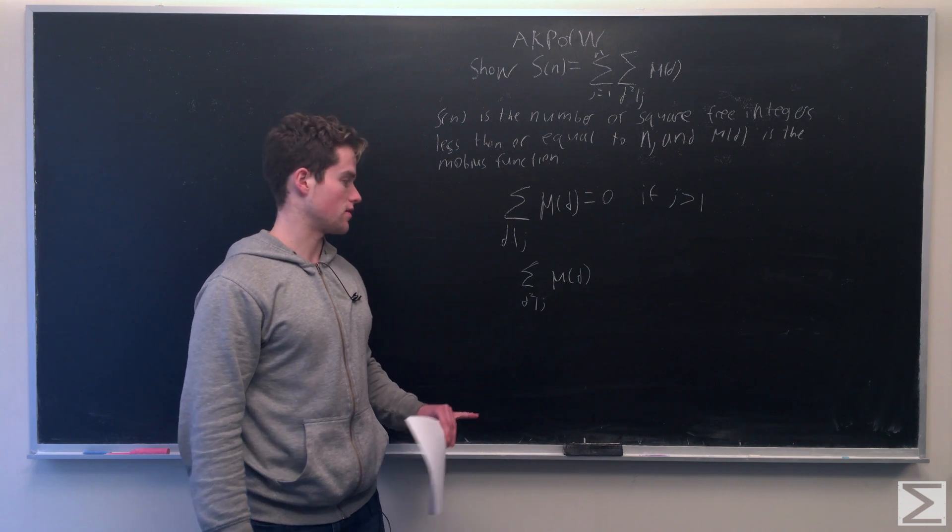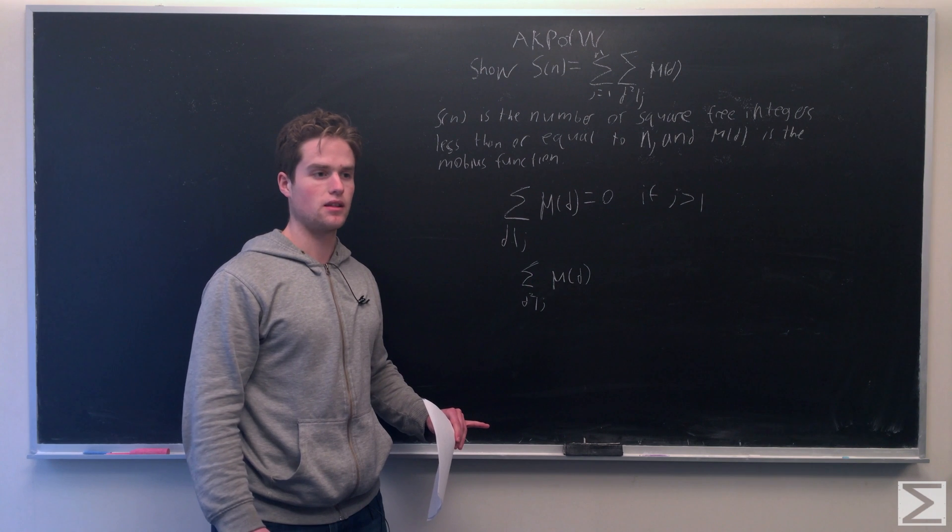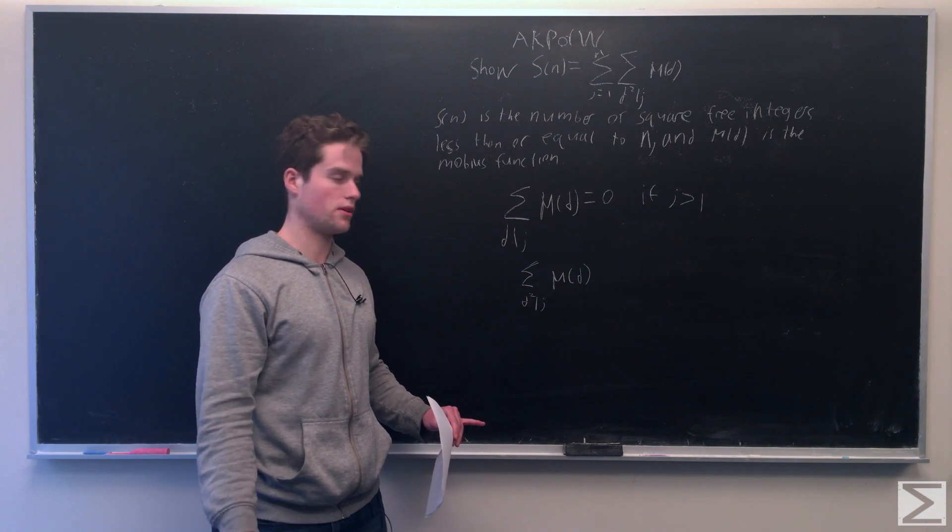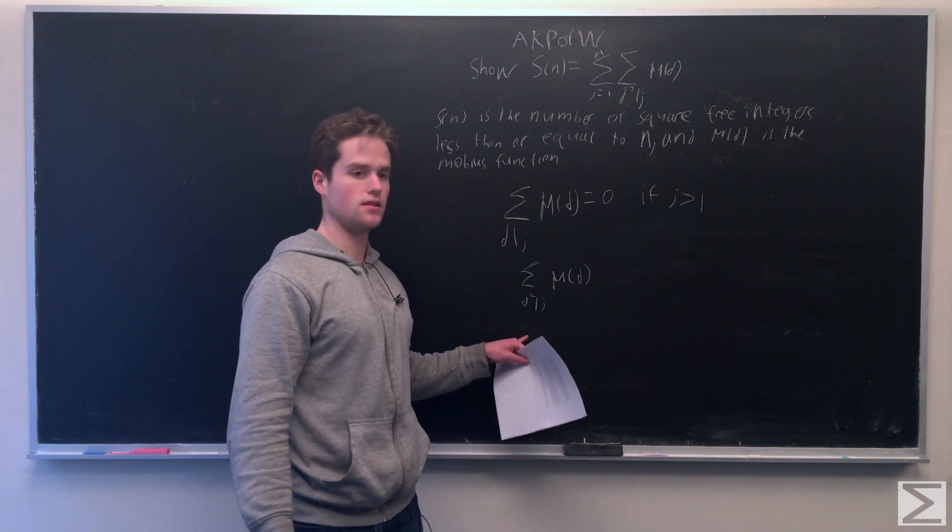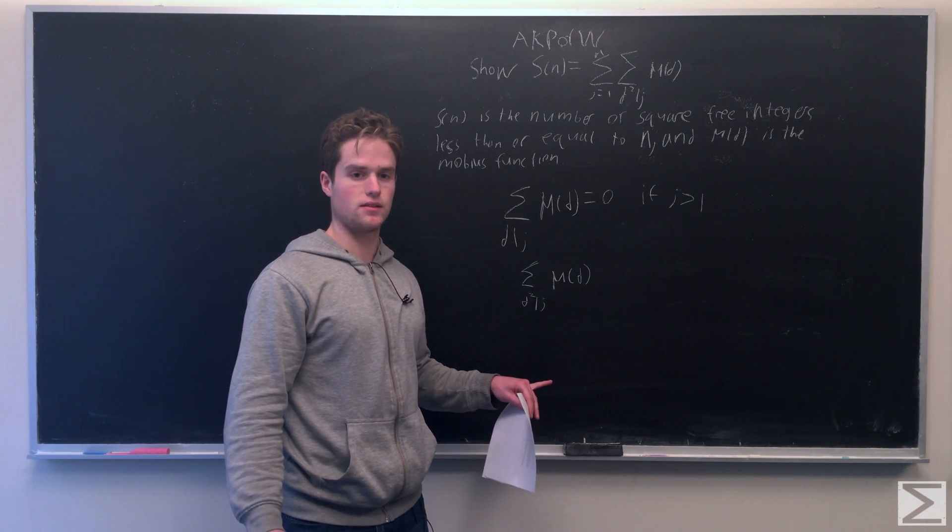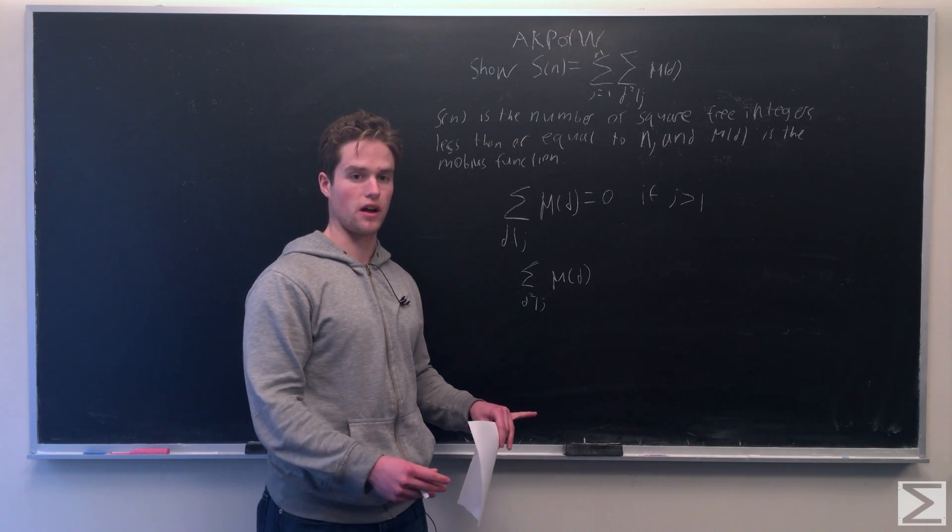Now if j is not square-free, there are some p1, p2, up to p_a, such that the powers of these p's are all greater than 1. And so we only need to consider d, such that d divides one of these, d divides the total product of all these primes.